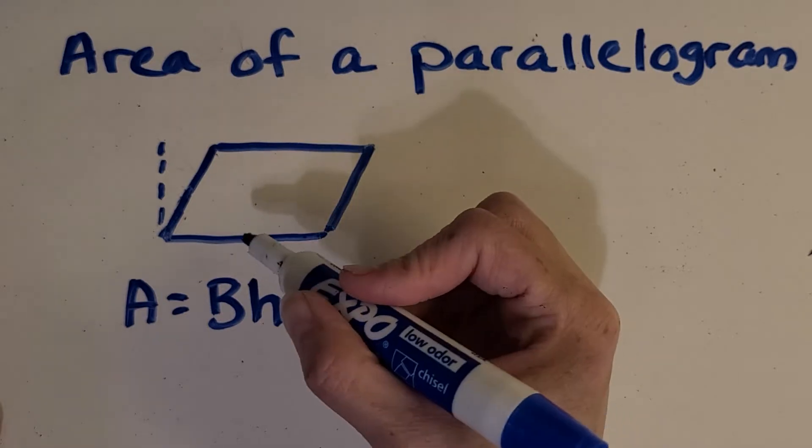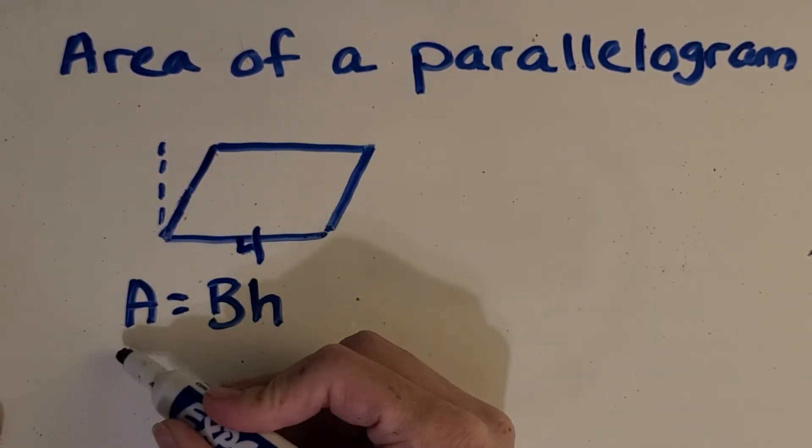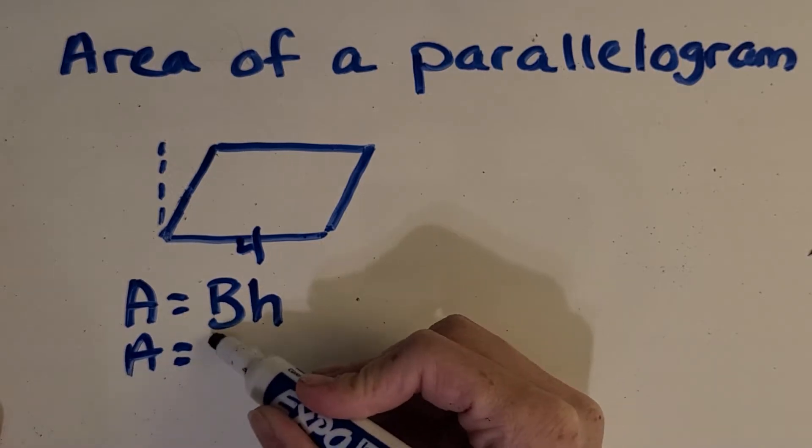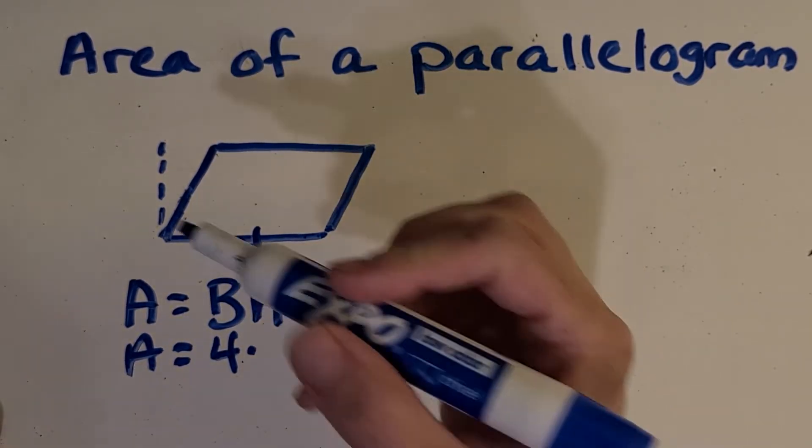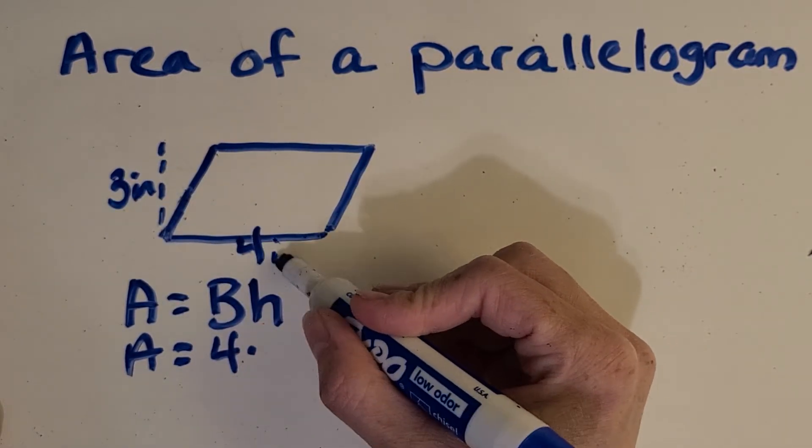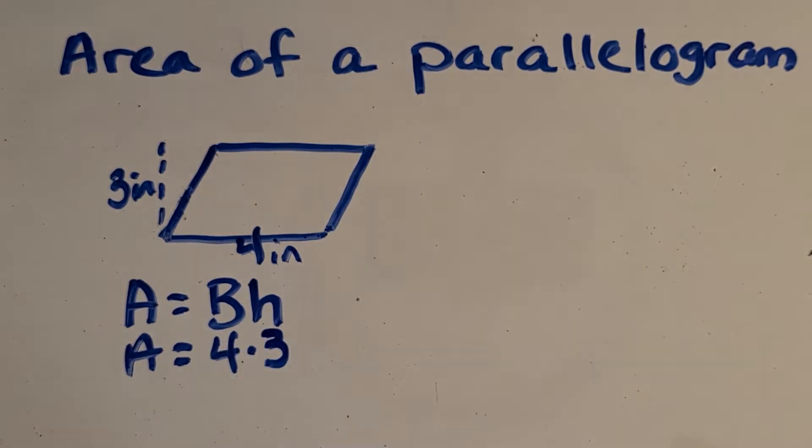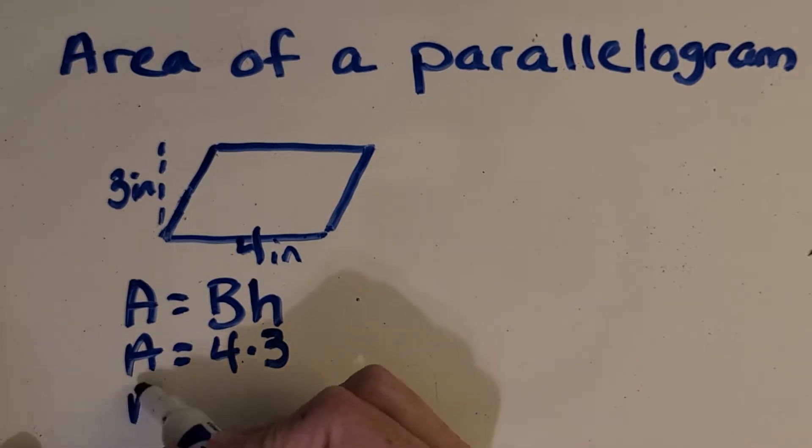So let's see an example here. So if the base is four, so we're going to be doing four times something, and the height is three, we'll just say these are inches, just so we have a unit. All right, so what is the area of this parallelogram? Okay, you got it, 12.